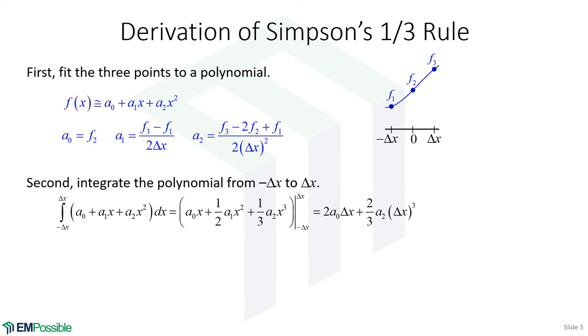Now, we want to integrate this polynomial. So, before we substitute in these expressions, let's take it as far as we can just with our simple polynomial. So, we want to integrate this polynomial from minus delta x to positive delta x. So, we perform an integration. We will then evaluate this polynomial at positive delta x. We will then subtract this polynomial evaluated at minus delta x, simplify, and we end up here.